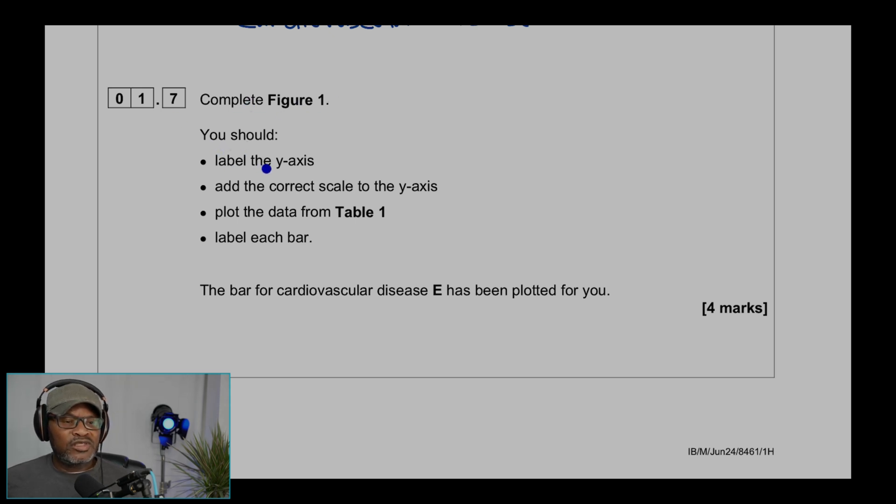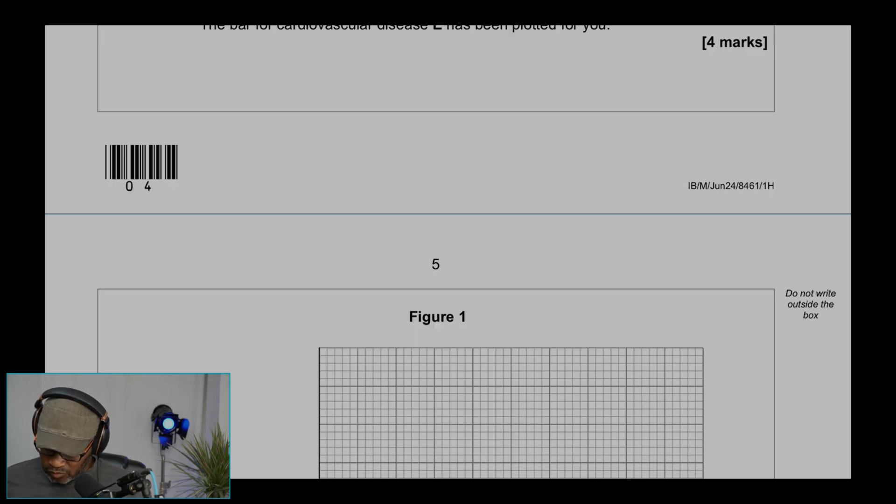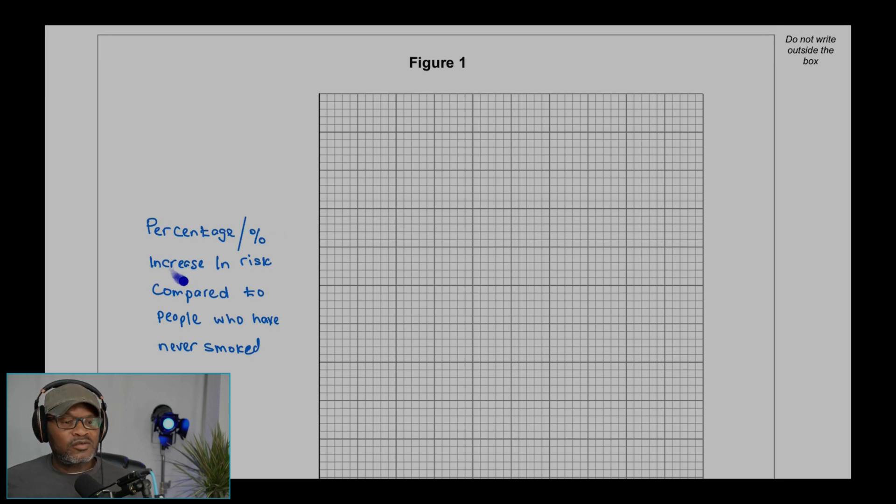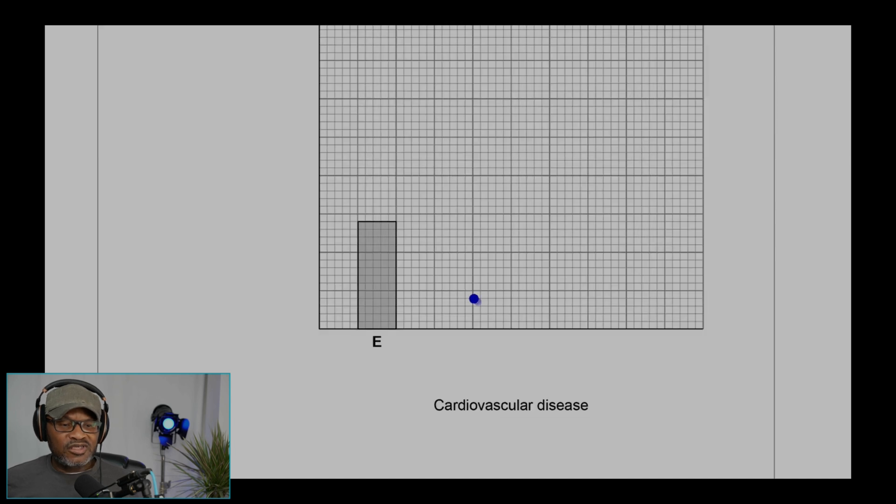Question 1.7: Complete Figure 1. You should label the y-axis, add the correct scale to the y-axis, plot the data from table 1, label each bar. The bar for cardiovascular disease E has been plotted for you. This is Figure 1. What we need to do is label the y-axis here. So the y-axis: percentage increase in risk compared to people who have never smoked.